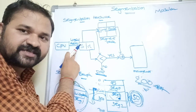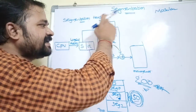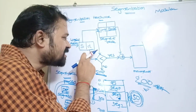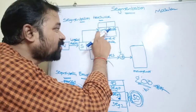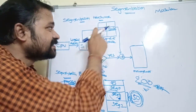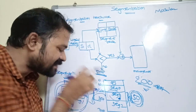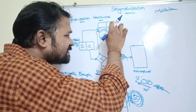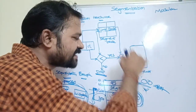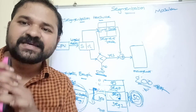To summarize: the CPU generates a logical address divided into two parts — segment number and offset. The segment number is given as input to the segment table. Using a comparator, we check whether the offset is less than the limit of the segment. If it is, the instruction is valid, and we add the base address of the segment with the offset to get the exact physical address in main memory. The CPU then executes that instruction. This is how segmentation works.